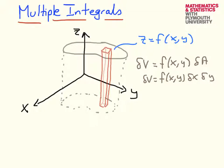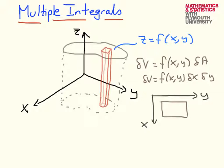How should we describe this sum? For simplicity, let's look at the region being a rectangle. Looking from above, with the x-axis and y-axis visible, we assume the region is a rectangle and break it up into lots of little rectangles. In the diagram we have three steps in one direction and five in the other, and generally we'll have n steps in one direction and m steps in the other.